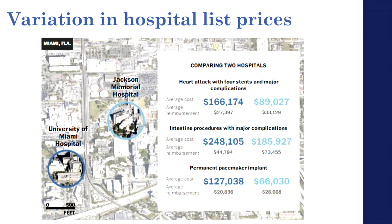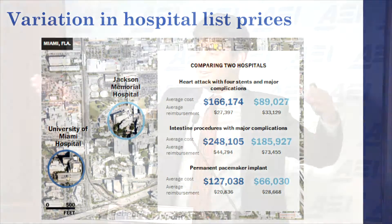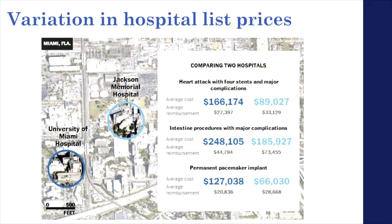It's not just that they're high. If you've seen a newspaper article about this issue, you've seen a picture like this: you take two seemingly pretty similar hospitals — in this case we're in Miami, comparing the University of Miami to Jackson Memorial Hospital. They're 750 feet away from each other, and if you look at the list prices, there are crazy differences. Same labor market, same costs of property, same taxes — and yet if you have a heart attack with four stents and major complications, it's $90,000 at Jackson and $165,000 at Miami. A pacemaker: $65,000 at Jackson, $125,000 at Miami. So it's not just that prices are really high — this big increase has led to tremendous variation, even very locally.